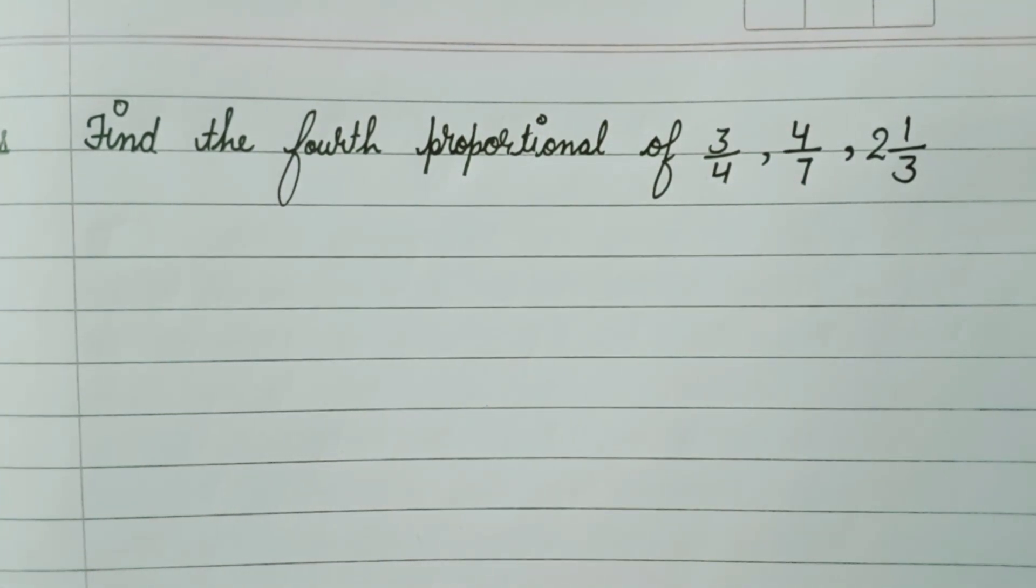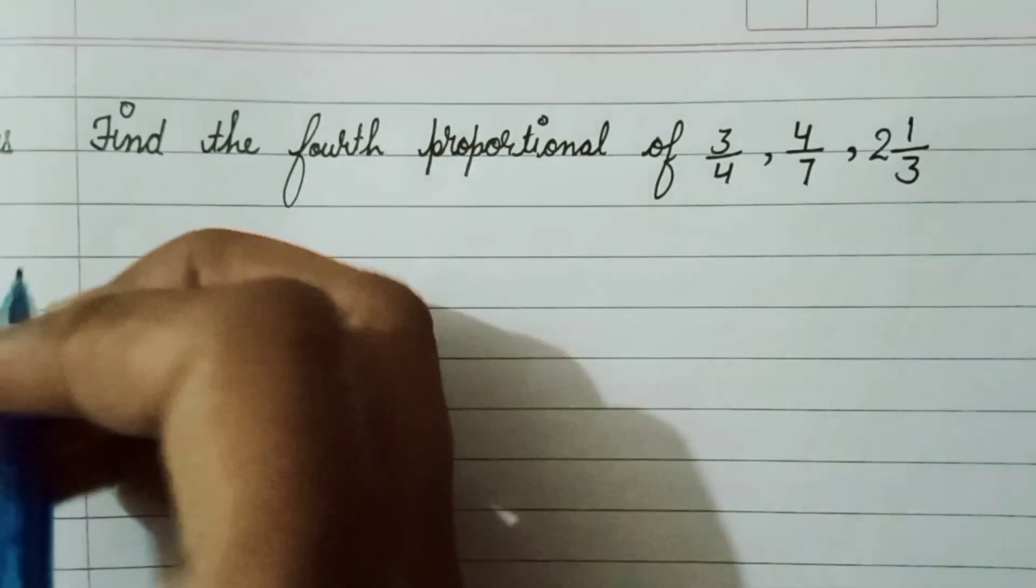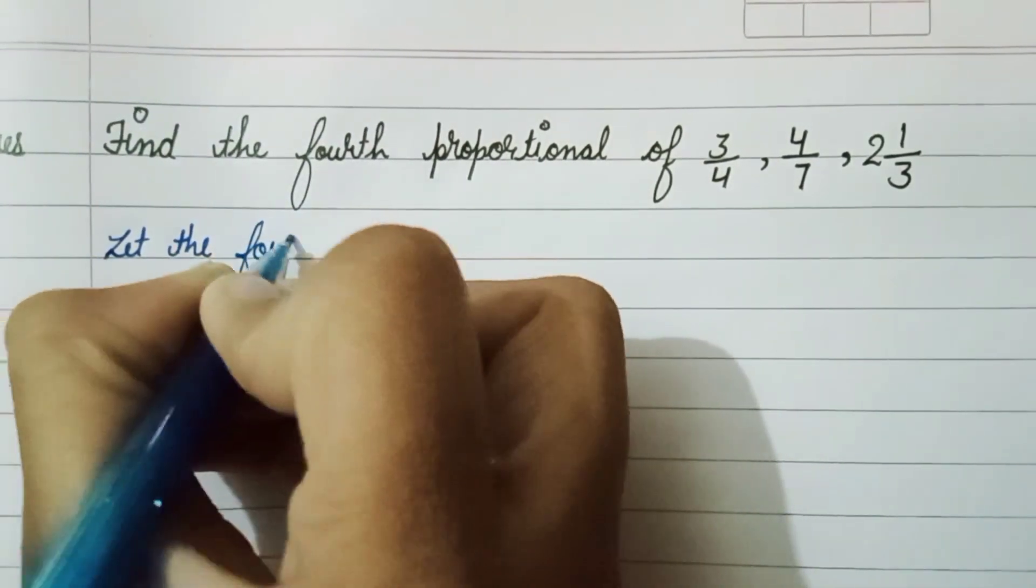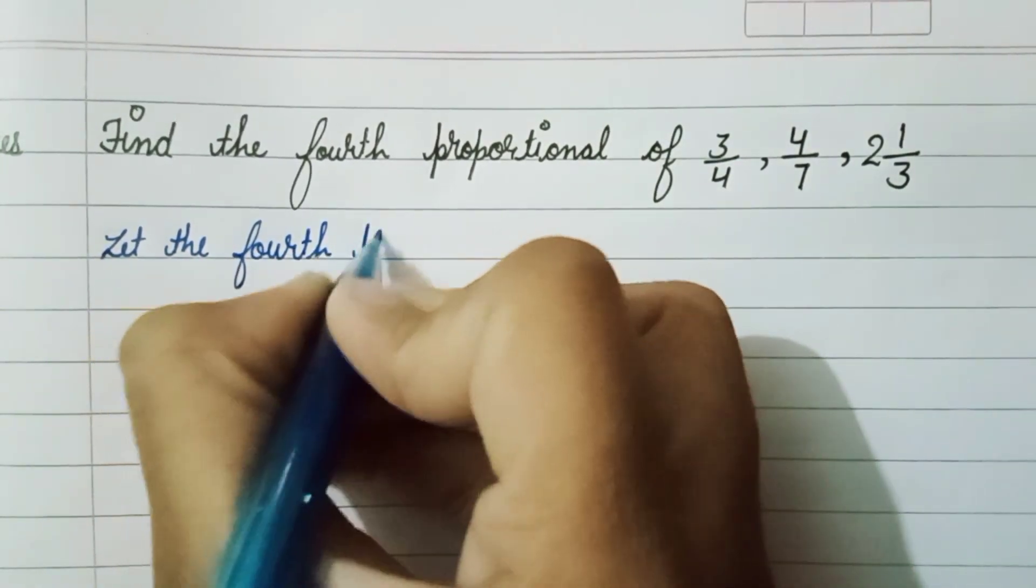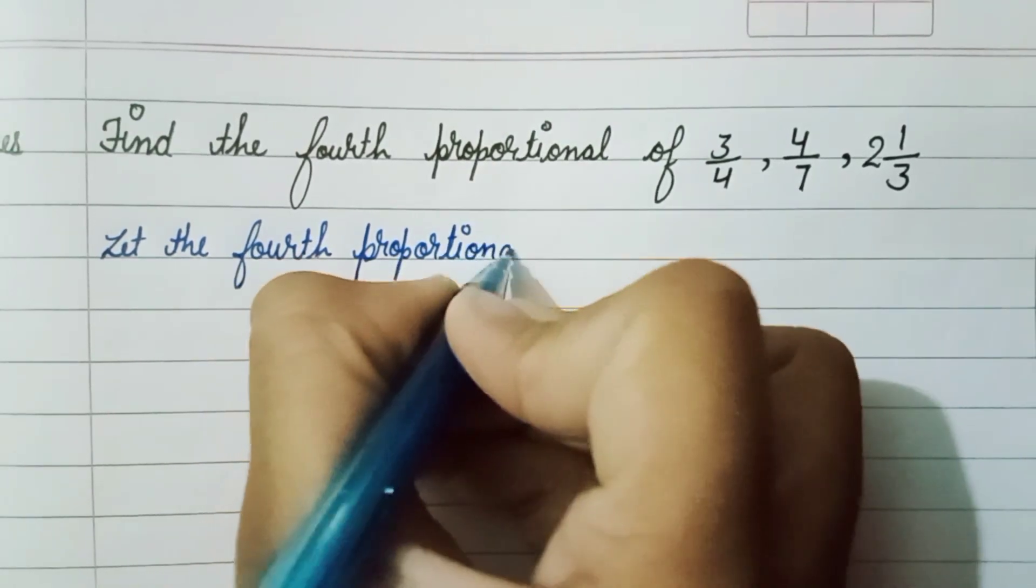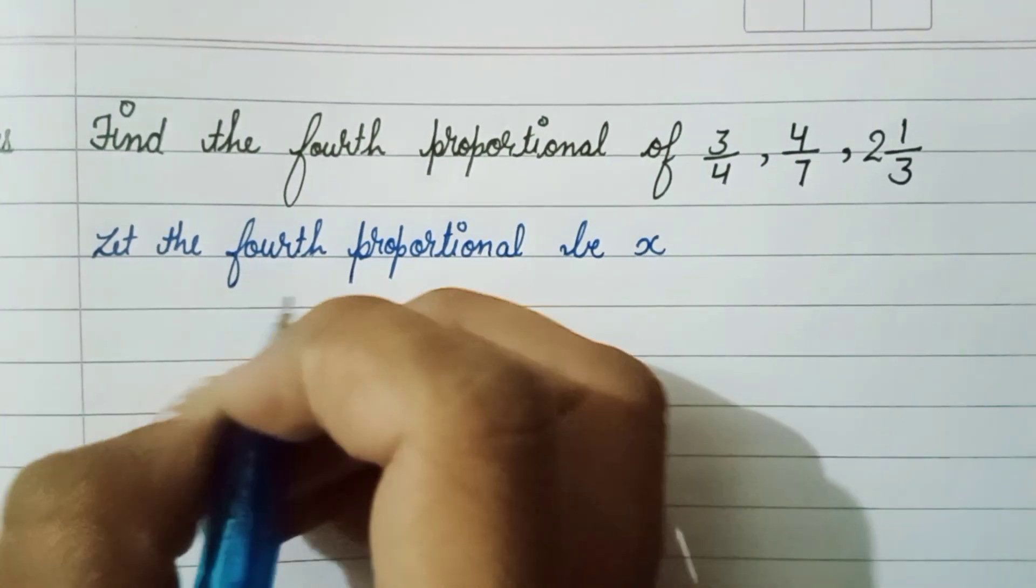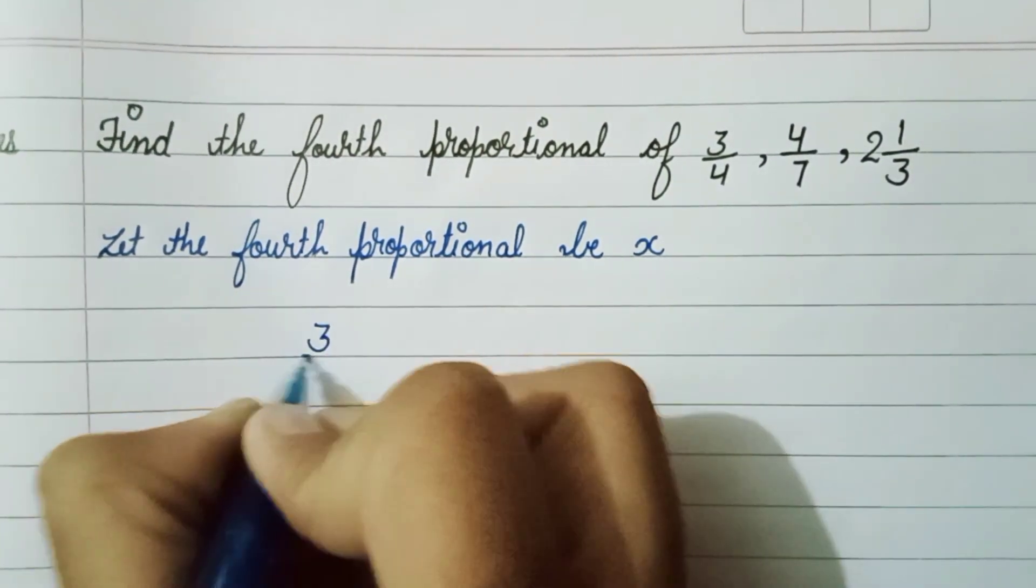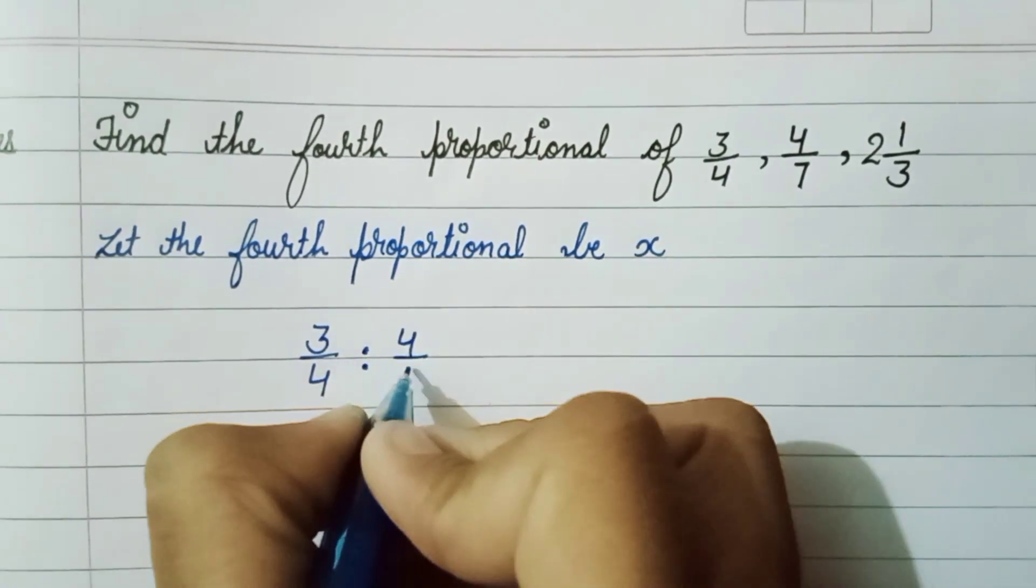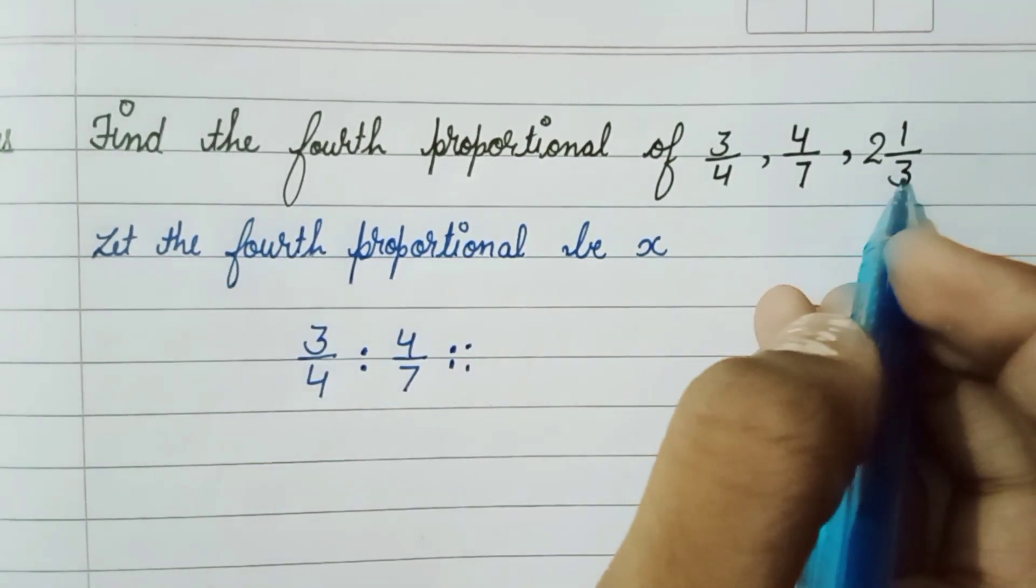First, we let the fourth proportional be x. This means 3/4 : 4/7 :: 7/3 : x. When we convert 2 1/3, we get 7/3.